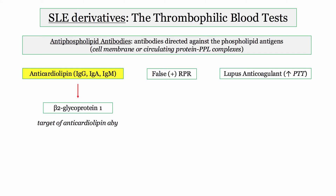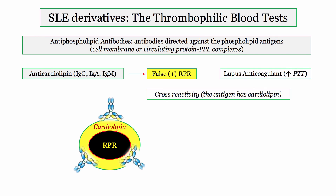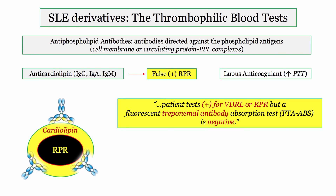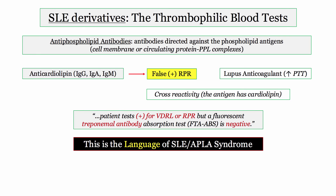Beta-2-glycoprotein 1 is the target of anticardiolipin antibody. Beta-2-glycoprotein has a minor regulatory role in the coagulation cascade, so autoantibodies predispose to thrombosis. Regarding the false positive RPR: as many as 20% of SLE patients will cross-react on RPR testing, because the antigen used in testing for syphilis has cardiolipin present. Questions will directly inform you of a positive syphilis antigen test alongside a negative antibody test — this discordant pattern indicates the patient either has SLE or antiphospholipid antibody syndrome.